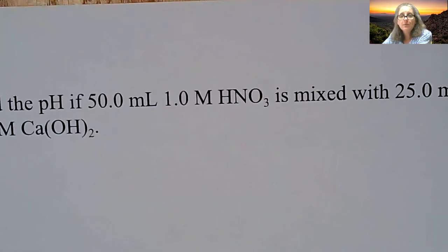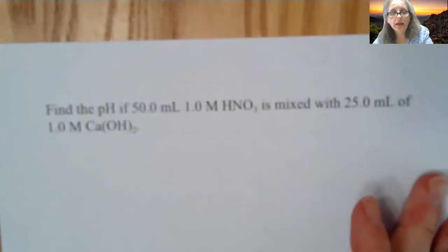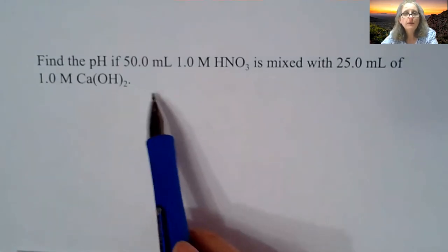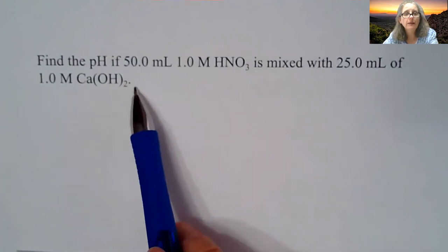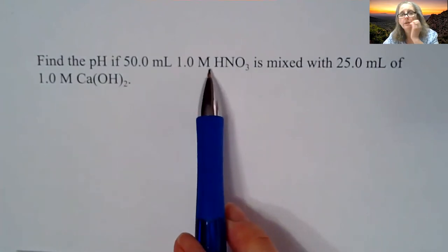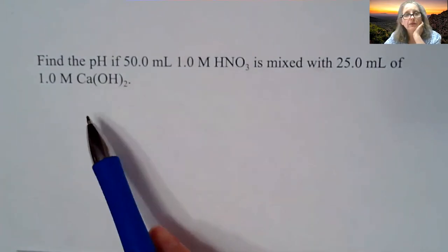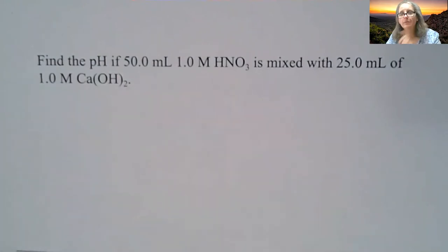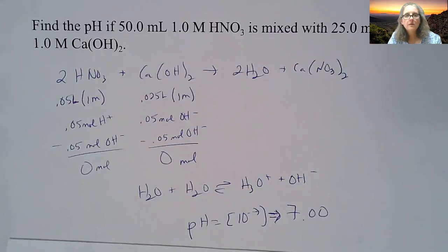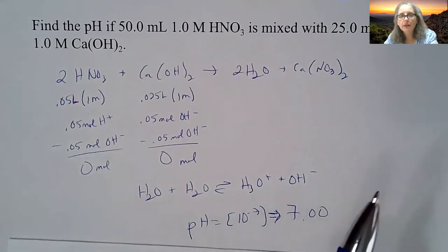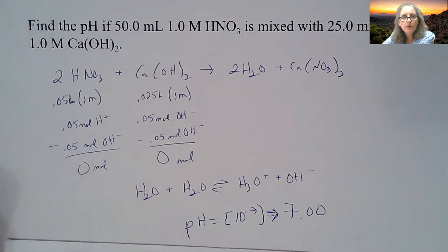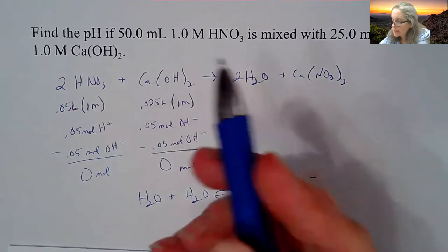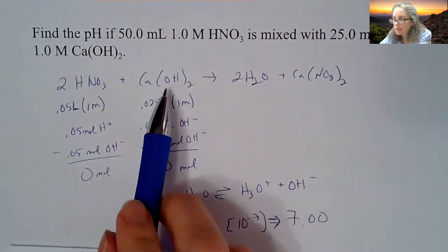So next problem is somewhat similar. Find the pH of 50 mils of a one molar nitric acid mixed with 25 mils of a one molar calcium hydroxide. I'm going to pause the video and come back and show you. So I like this one because it turns out that it comes out to be a pH of 7. You have the nitric acid, HNO3, and then the calcium hydroxide. You need twice the amount of nitric acid because you have two OHs in this equation.